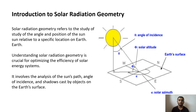Solar Radiation Geometry refers to the study of the angle and position of the sun relevant to a specific location on Earth. Understanding solar radiation geometry is crucial for optimizing the efficiency of solar energy systems. It involves the analysis of the sun's path, angle of incidence, and shadows cast by objects on Earth's surface. Here is the diagram of solar radiation geometry.